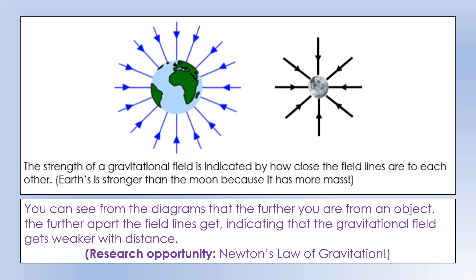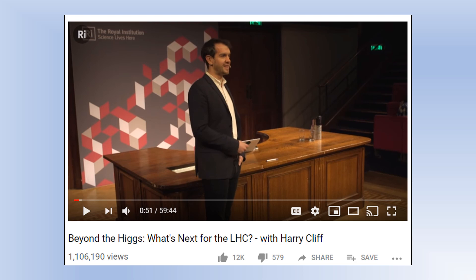The further from an object you get, the further apart the field lines are on the diagrams, indicating the gravitational field gets weaker with distance - but it never actually gets to zero. Gravity is what we call an infinite range force; it extends as far across the universe as you want. Those who want to find out more might want to look up Newton's law of gravitation, which models this really well.